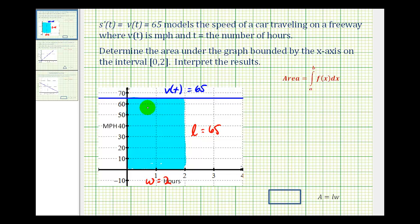But again, because this function is continuous and non-negative on this interval, we can represent the area as a definite integral. Let's go ahead and do that. The area would be equal to the definite integral from zero to two of 65 with respect to x. Because this region is rectangular, the area would just be 65 times 2, which equals 130.